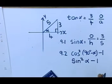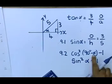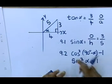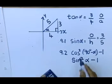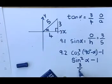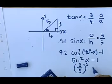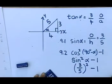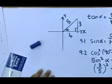Onthou dit, baie van julle vergeet dit, julle kry dit nie aan die regte kant nie. Onthou 90 minus alpha is 'n co-funksie, cos gaan na sin toe. En dan, sin is, ons het sin daar, sin is 3 op 5. So dit is 3 op 5. Ek moet dit kwadreer, minus 1. En jy kan dit uitwerk op julle calculators. Dit is nie so 'n moeilike vraag om uit te werk nie.